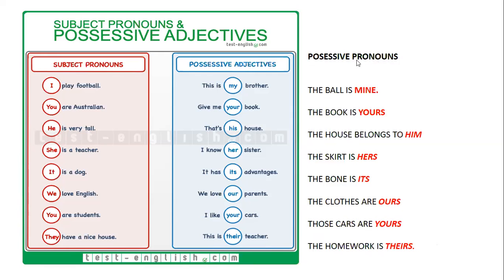Quiero que sepan que hay subject pronouns — pronombre sujeto: I, you, he, she, it, we, you, and they. Possessive adjectives — adjetivos posesivos, que es lo que estamos estudiando en la plataforma: my, your, his, her, its, our, your, their. Y possessive pronouns, que vamos a estudiar más adelante: mine, yours, him, hers, its, ours, yours, and theirs. Por ahora nos vamos a enfocar específicamente en possessive adjectives — porque yo digo my name is, her name is, his name is, its name is.